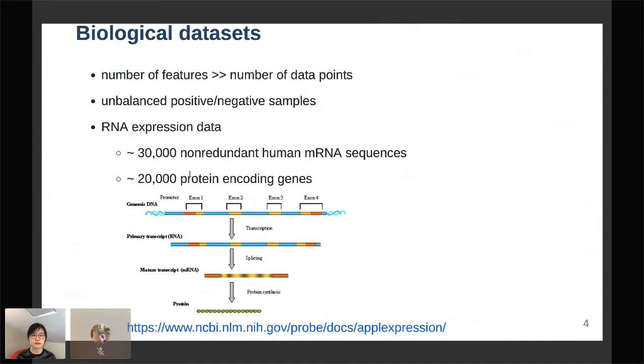That often leads to very unbalanced positive and negative samples. Here I'm showing the central dogma where the genomic DNA gets transcribed into RNA and then RNA gets translated into protein. For a typical RNA expression dataset we are looking at 30,000 non-redundant human mRNA sequences.